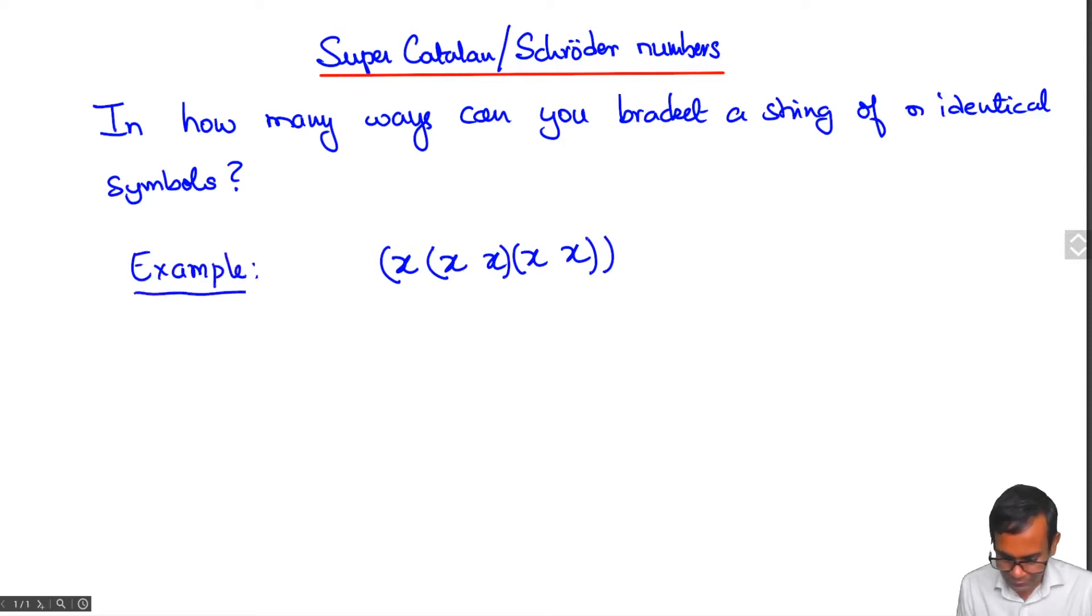To give a precise definition it's best to give it recursively. Firstly, we say that a single letter string x itself is a bracketing.